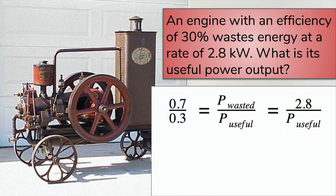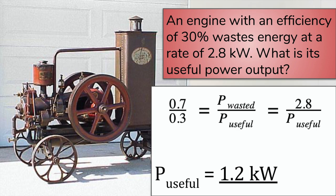In this case it is clear that if the useful power represents 30% of the total power, then the wasted power is 70%. So they can be equated as ratios where the wasted divided by the useful proportion is equivalent to the ratio of their actual values. Useful power is therefore 1.2 kW.